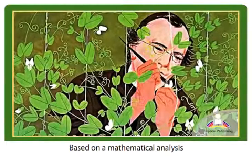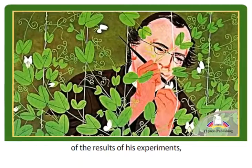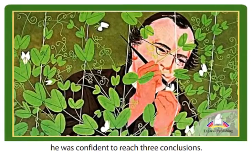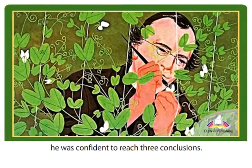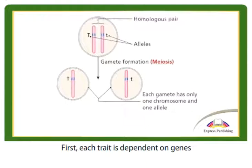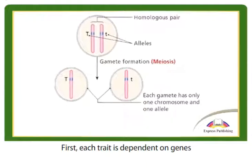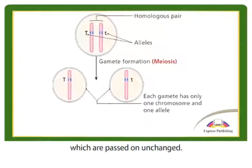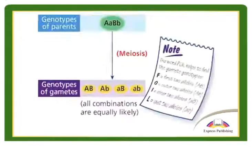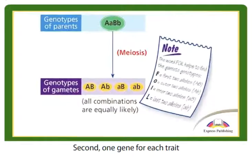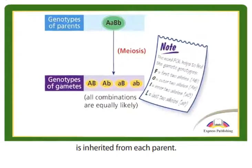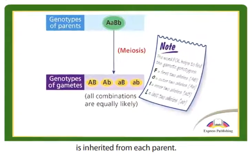Based on a mathematical analysis of the results of his experiments, he was confident to reach three conclusions. First, each trait is dependent on genes which are passed on unchanged. Second, one gene for each trait is inherited from each parent.